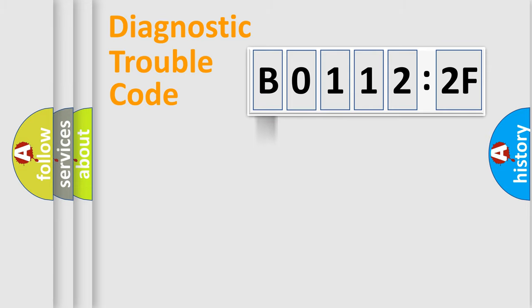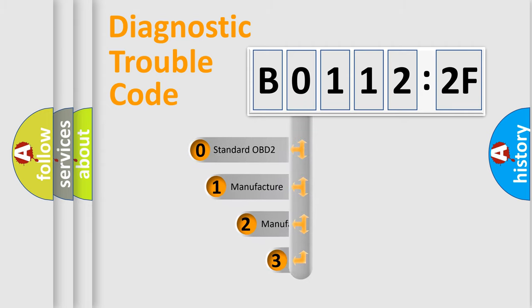Powertrain, Body, Chassis, Network. This distribution is defined in the first character code.